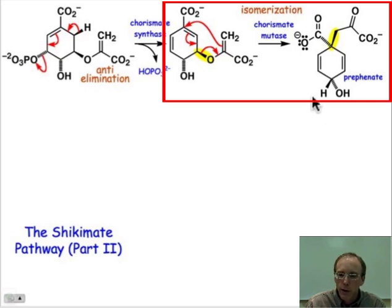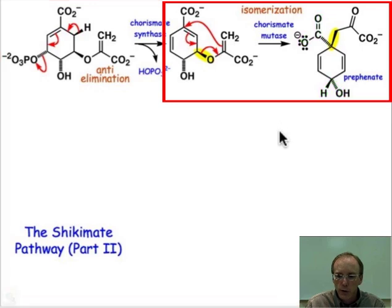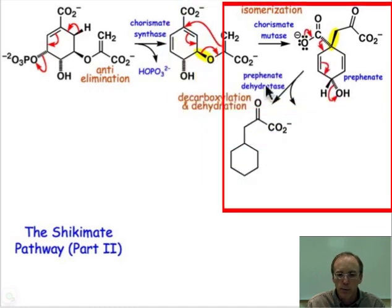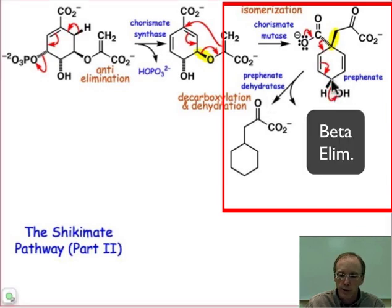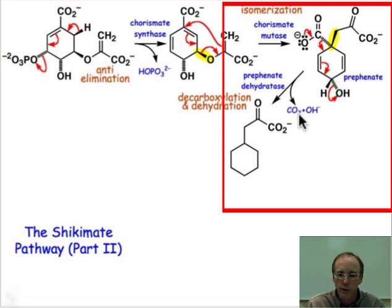That gives us prephenate. What we have to do now is a decarboxylation, and we're going to do that with manipulations that take place at the last position here, which differentiates phenylalanine from tyrosine. We can imagine a decarboxylation taking place, and that's what the enzyme prephenate dehydratase does — decarboxylation simultaneously eliminating that hydroxyl group by the curved arrows that you see there. The byproducts are CO2 and hydroxide.